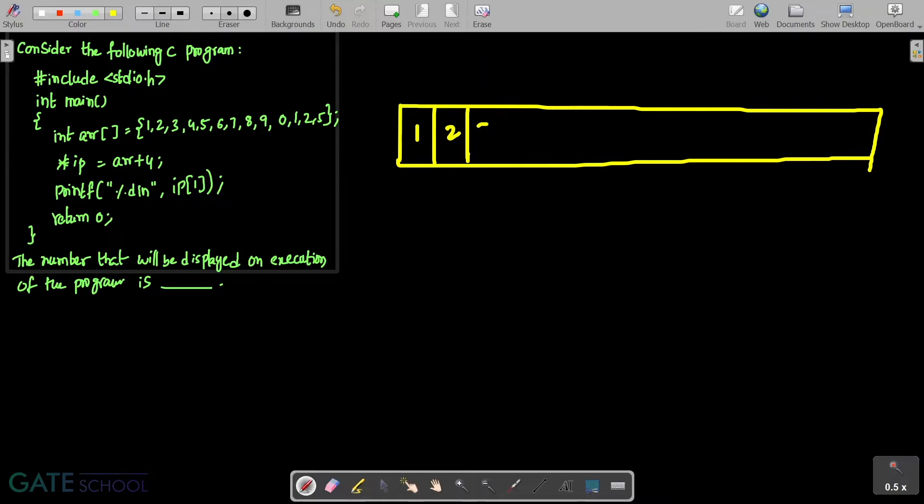1, 2, 3, 4, 5, 6, 7, 8, 9, 0, 1, 2, 5. These are the different values stored inside the array.